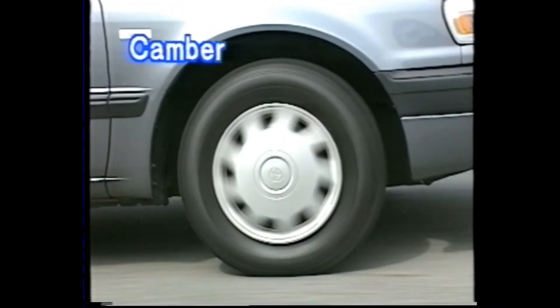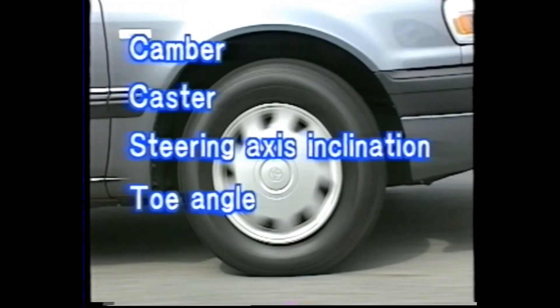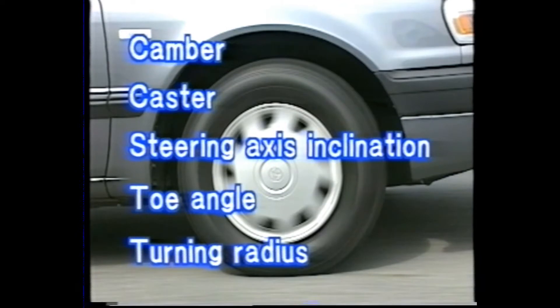The front wheel alignment is made up of five factors: camber, caster, steering axis inclination, toe angle, and turning radius.